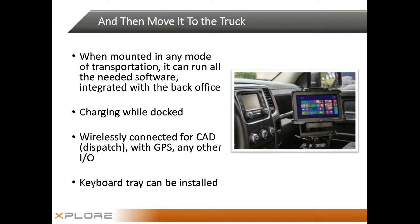Rugged tablets also have the option of a keyboard mounted in the vehicle. They often contain built-in GPS and high-gain radios, which means they can be reliably connected to the back office for dispatch and real-time information. The rugged tablet PC can run all the software dictated by your back office system — software that's integrated tends to run on the same operating system and needs similar capabilities. That can be available in the truck.